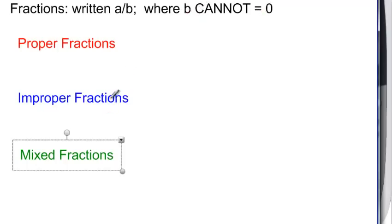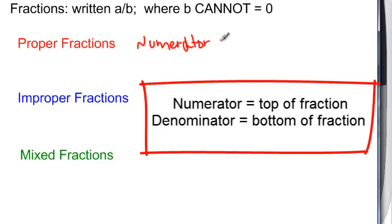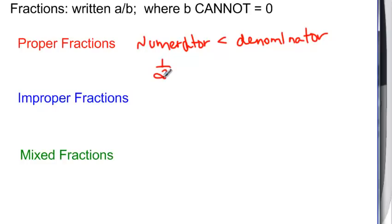Here are the different kinds of fractions that we can have. We can have proper fractions, and in a proper fraction, the numerator, or the top part of the fraction, is going to be less than the denominator, or the bottom of the fraction. That would be something like 1 half. 1 is less than 2.